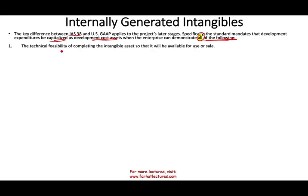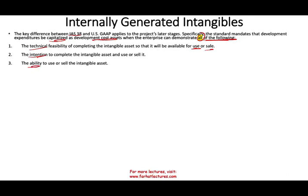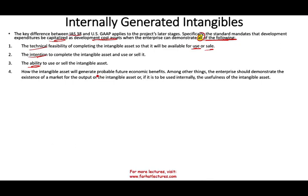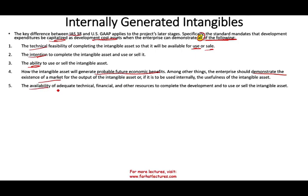Under IAS 38, you must demonstrate all six criteria to capitalize development costs. First, show the technical feasibility of completing the intangible asset so it will be available for use or sale. Second, show your intention to complete the intangible asset and use or sell it. Third, show your ability to use or sell it. Fourth, show how the intangible will generate probable future economic benefit — demonstrate the existence of a market for it, or that it will be used in your own production. Fifth, show that you have adequate technical, financial, and other resources to complete the project.